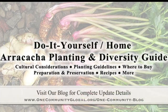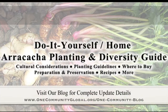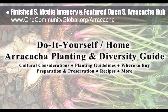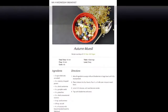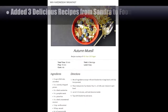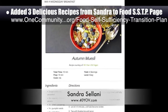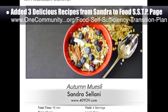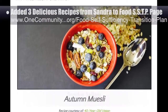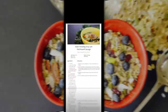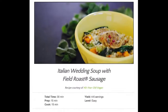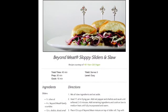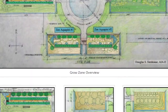This week the core team working on Highest Good Food finished the final social media imagery and featured our open source Arrakacah Hub. We also added three additional recipes from Sandra Salani, vegan chef and author of What's Your BQ, to the Food Self-Sufficiency Transition Plan. These recipes are autumn muesli, Italian wedding soup, and sloppy sliders and slaw.